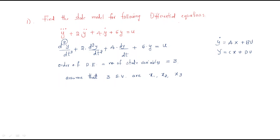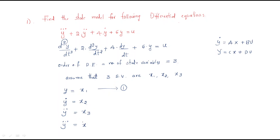We should maintain a relation between these three variables. First, take the first variable: y = x1. This is the first equation. The second variable: ẏ = x2. The third: ÿ = x3. And y triple dot would relate to x3 dot — but we should have only three variables.